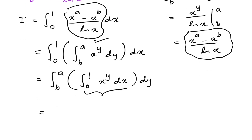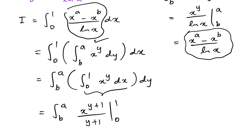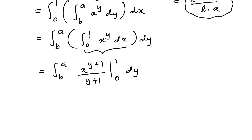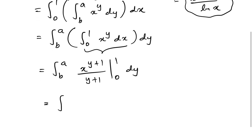Now we can evaluate the inner integral. Integrating x^y with respect to x gives x^(y+1) over (y+1), evaluated from 0 to 1. Applying the limits gives 1 over (y+1).